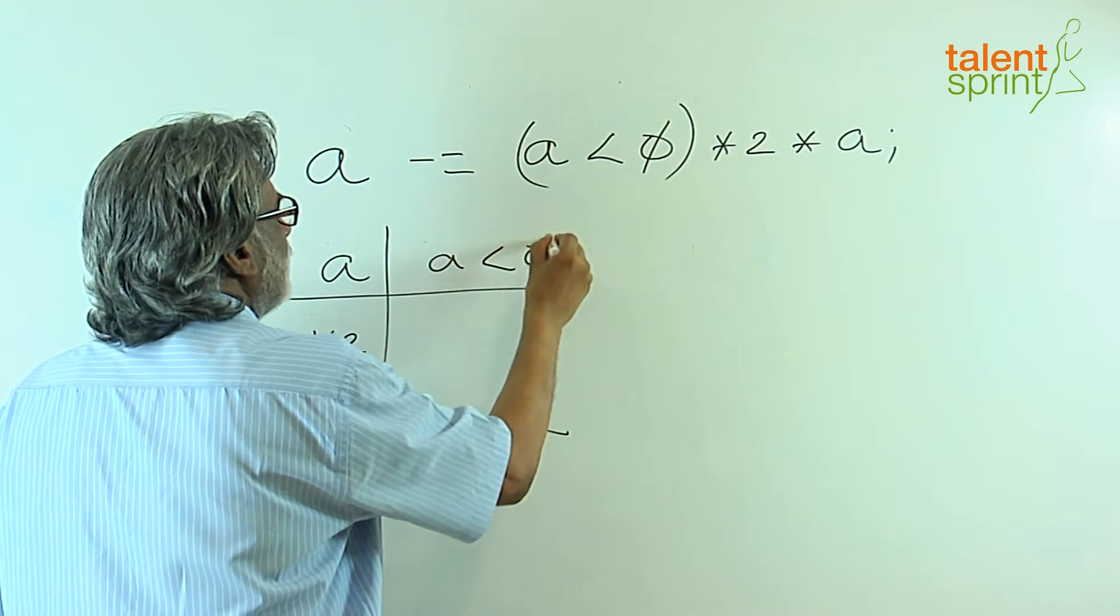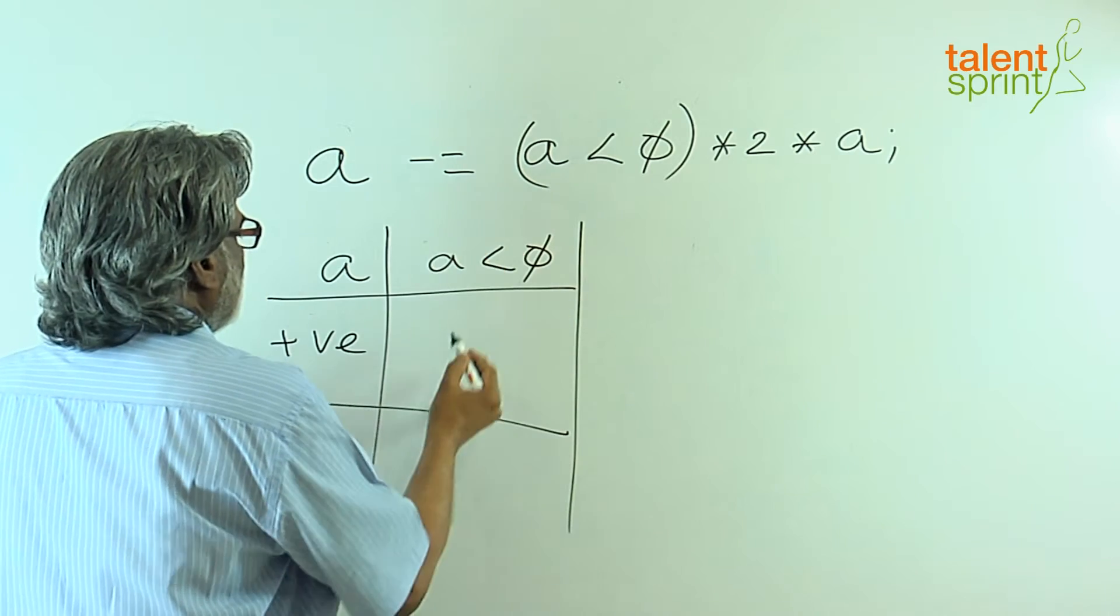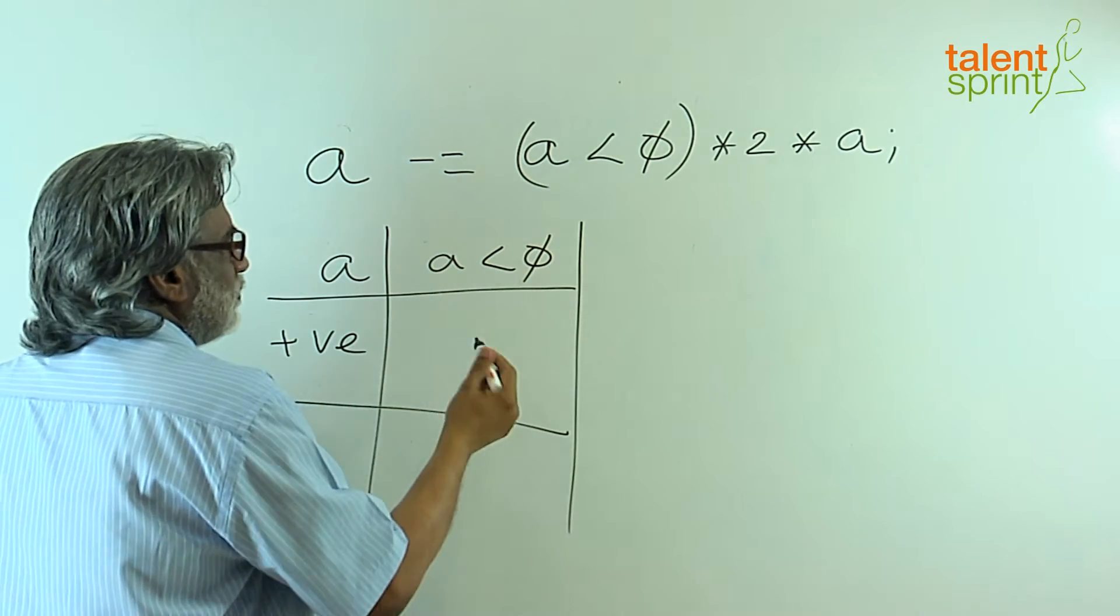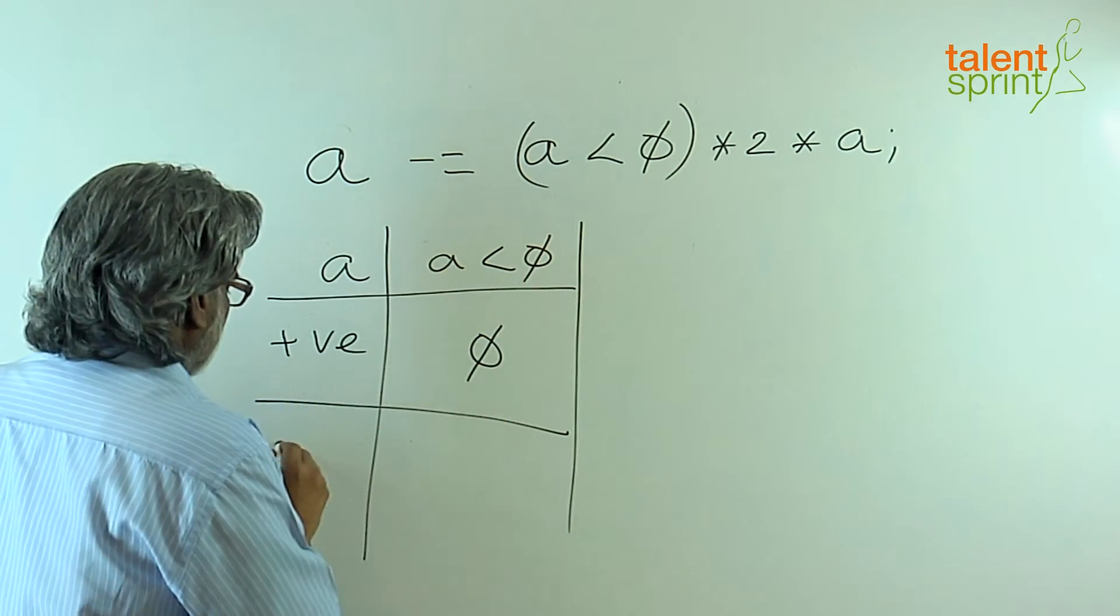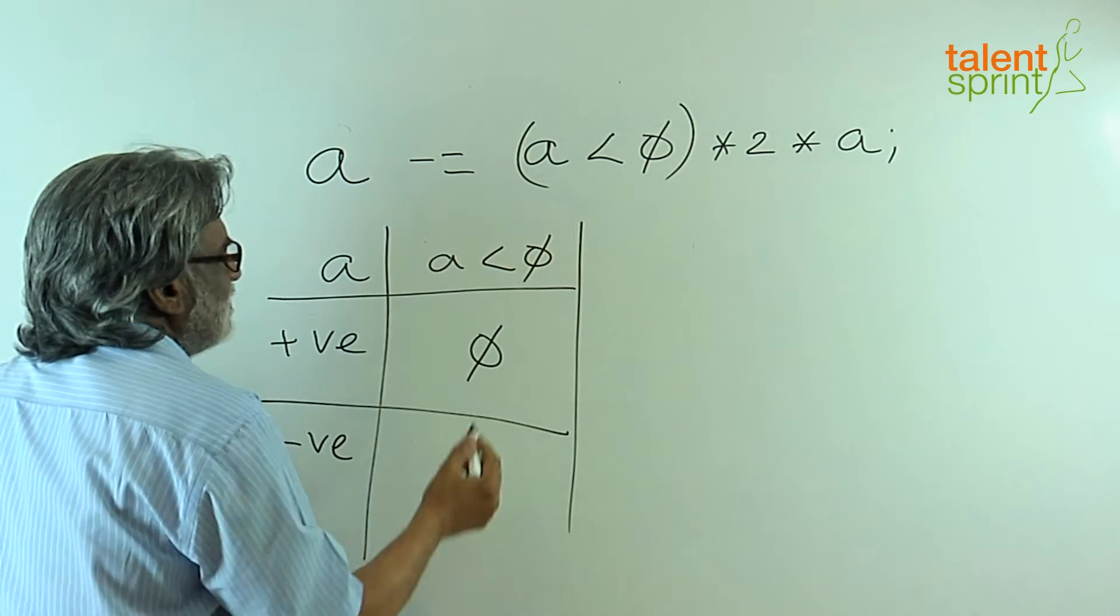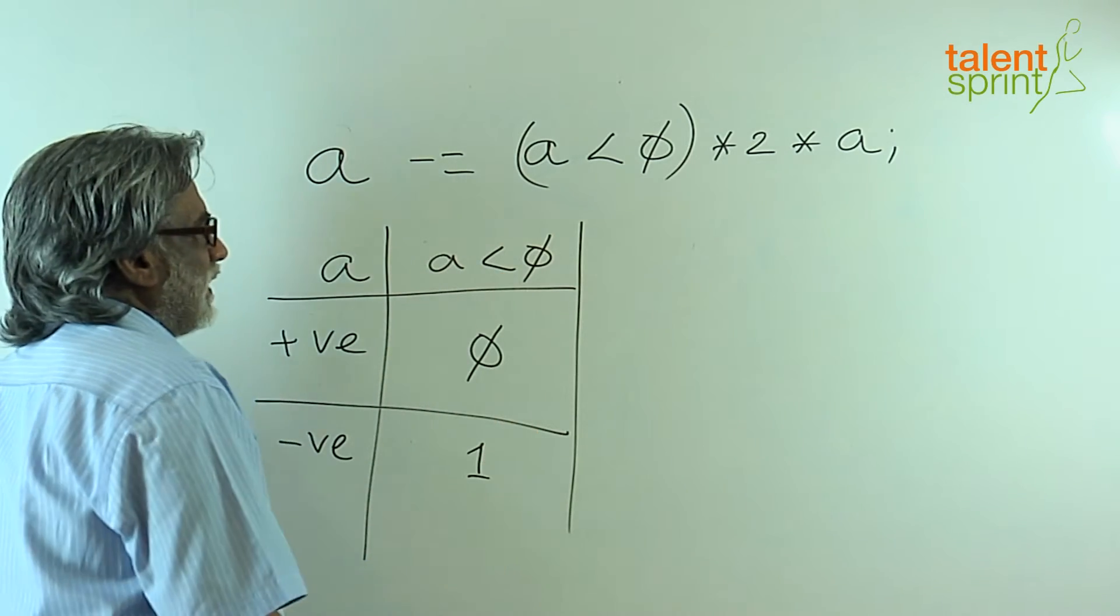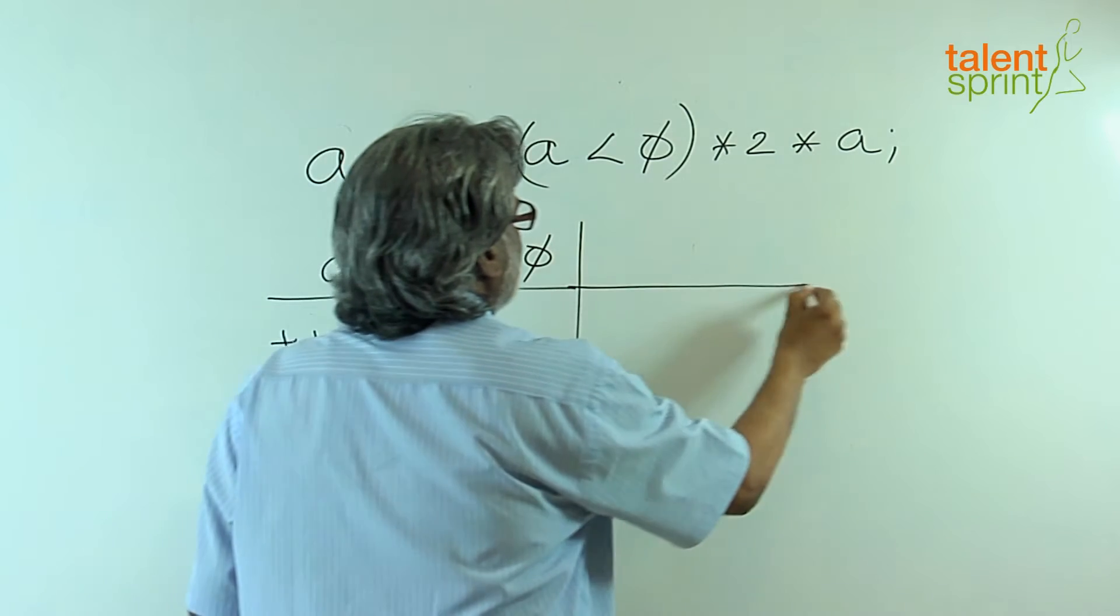Let us draw a table for positive and negative values of a, what is a less than 0? If it is positive, a less than 0 is false, which translates to 0. If it is negative, a less than 0 is true, which translates to 1.